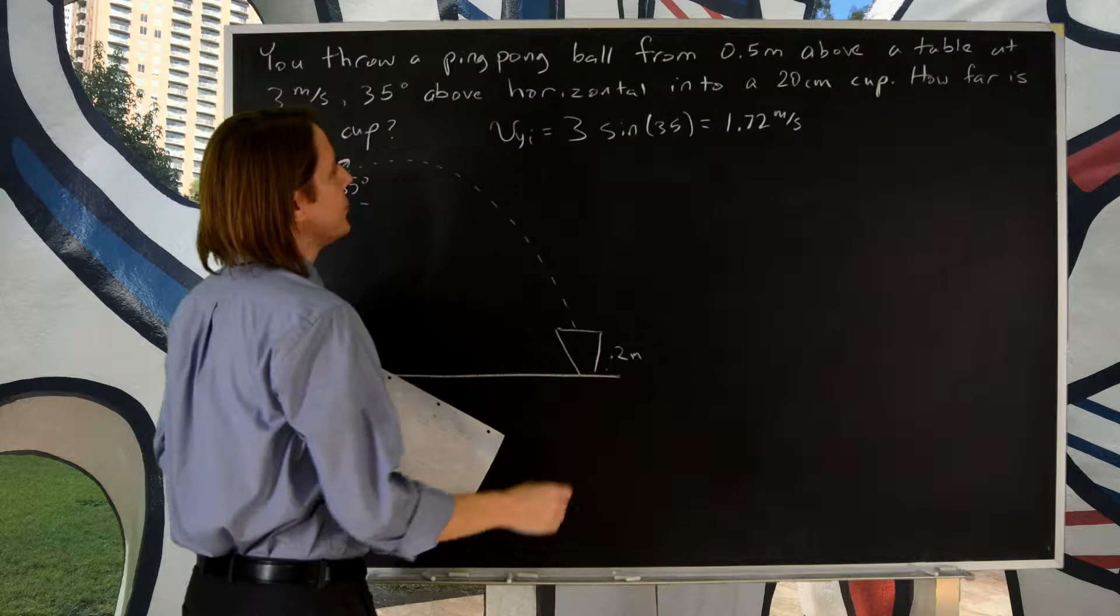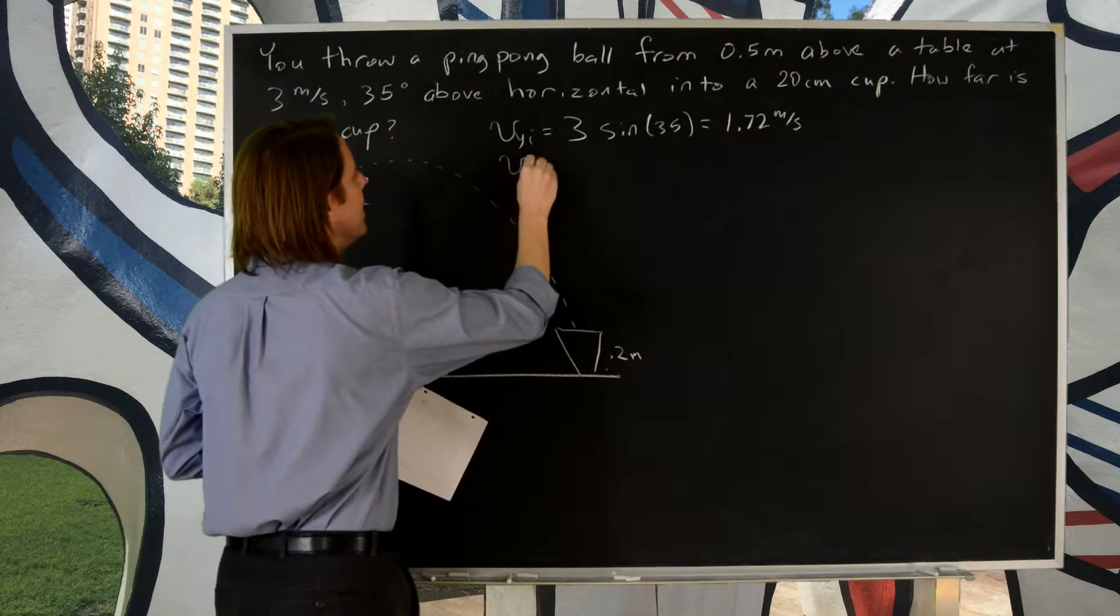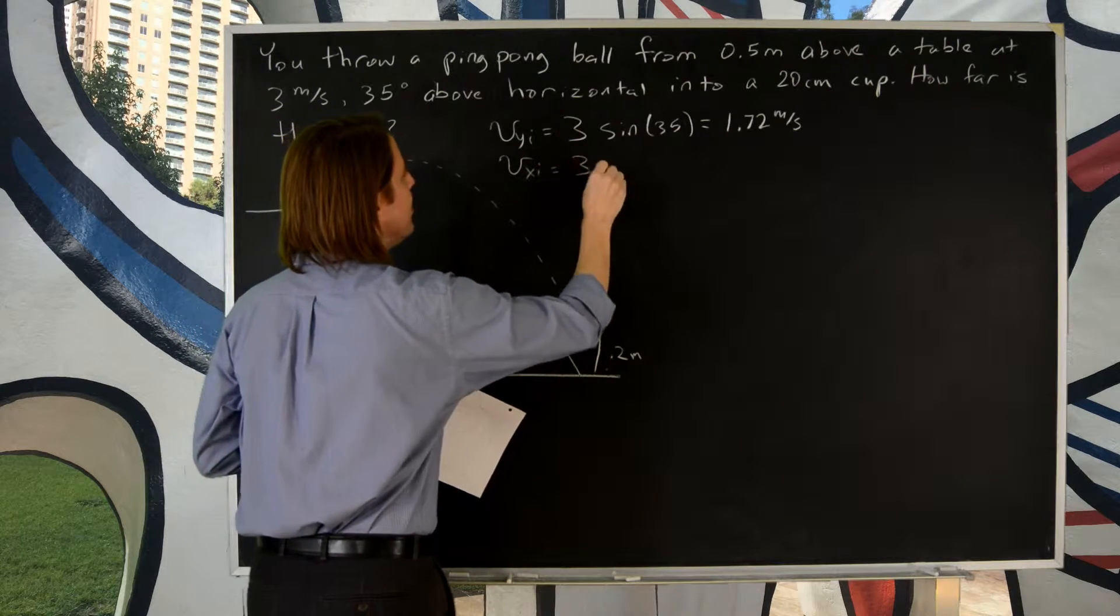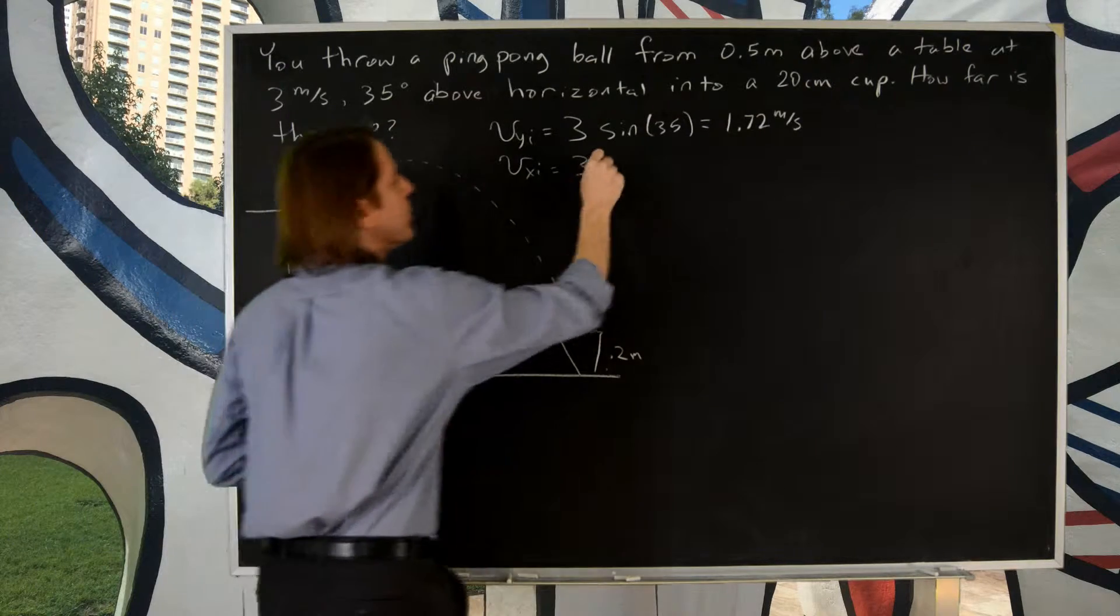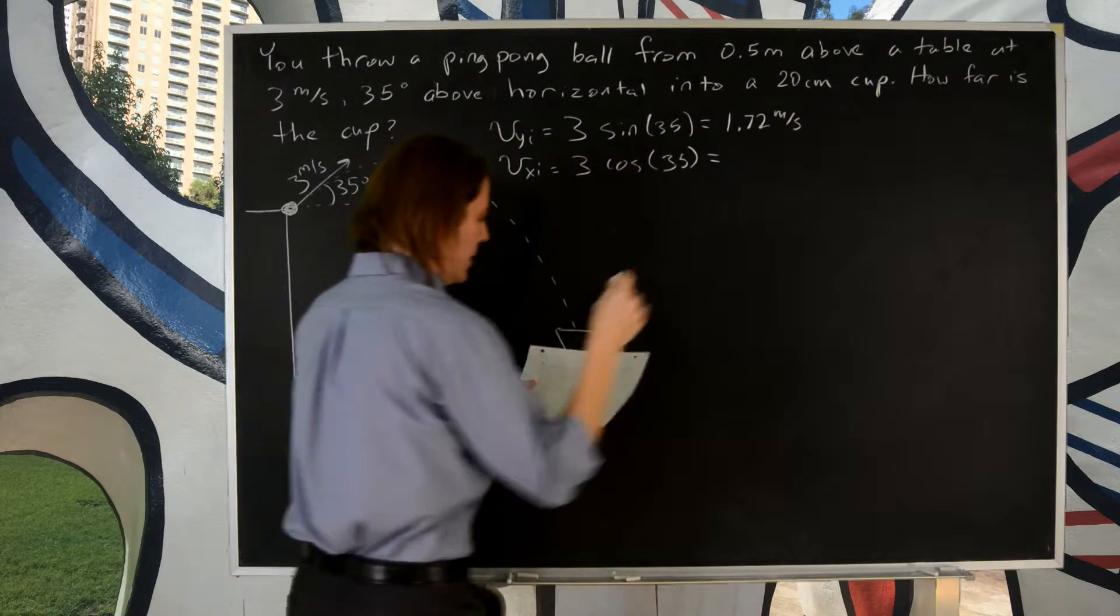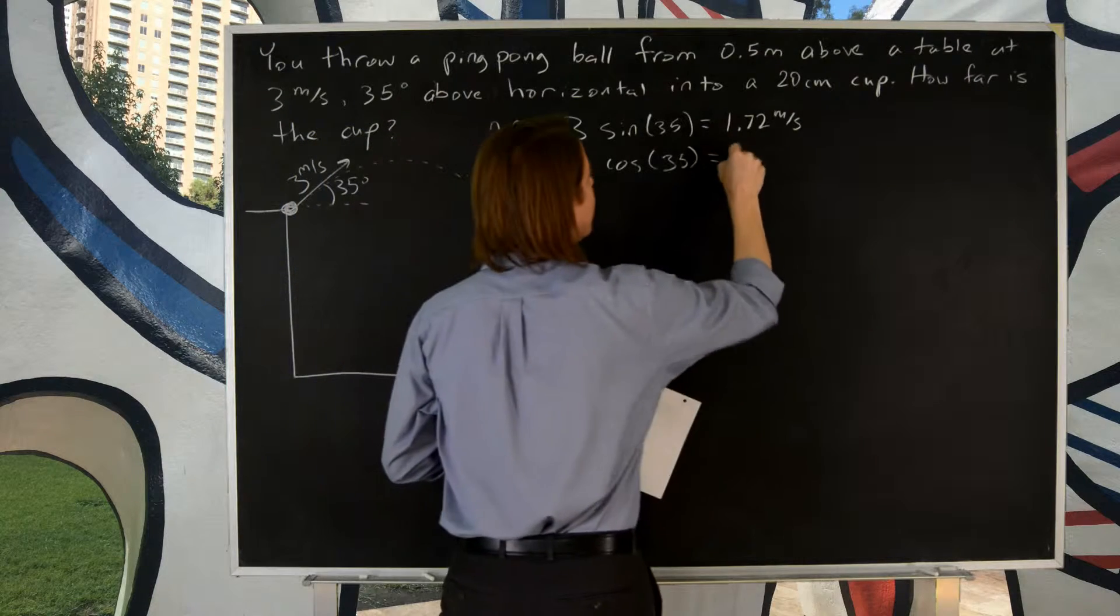And if I wanted the X component, Vx initial, 3 meters per second, and it's the cosine, cosine of 35. And I get 2.46 meters per second.